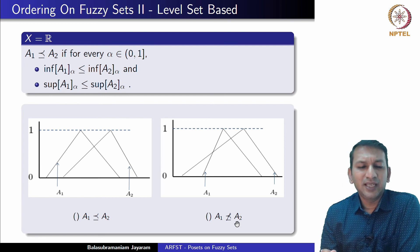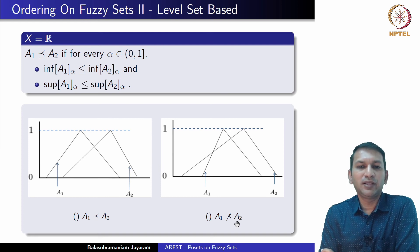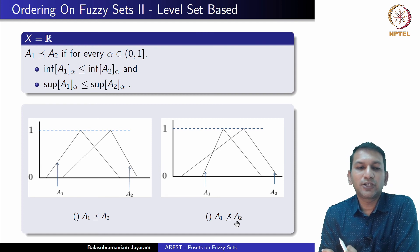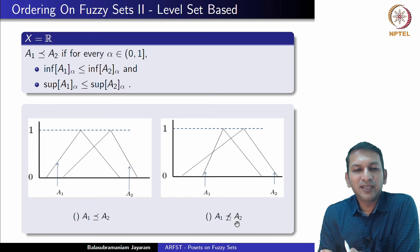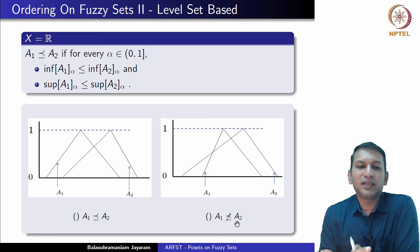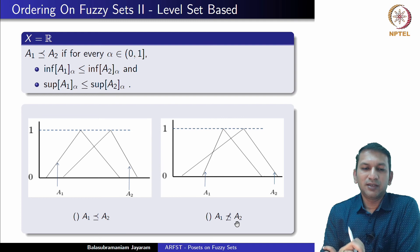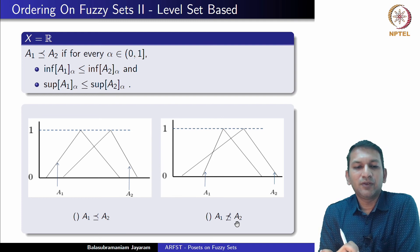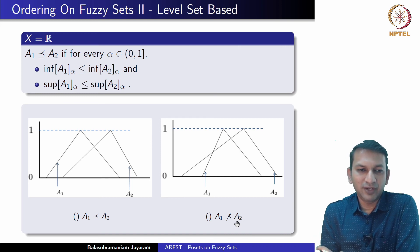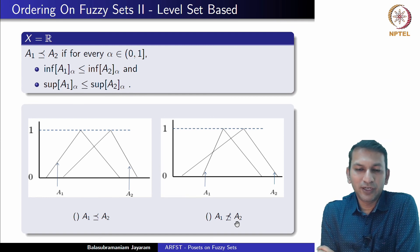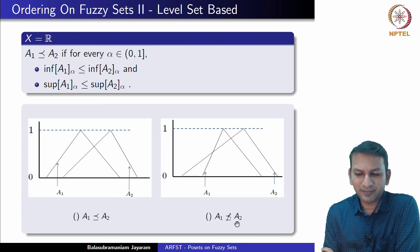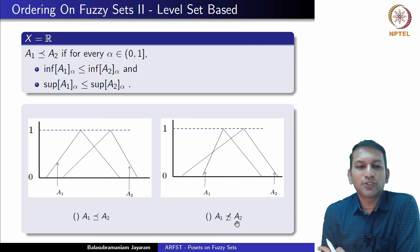The question is: even though we call this an order relation, is it actually a partial order? Interestingly, it is immediate to see that this relation is reflexive, since A₁ ≤ A₁. A special mention: here we interpret the infimum as the left endpoint of the alpha cut and the supremum as the right endpoint of the alpha cut. A justification for this will be provided in one of the upcoming lectures.